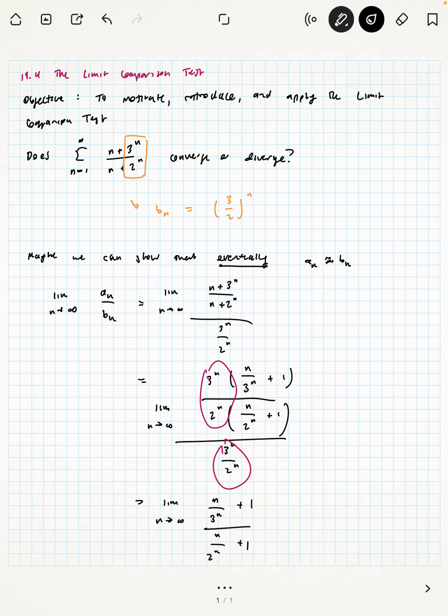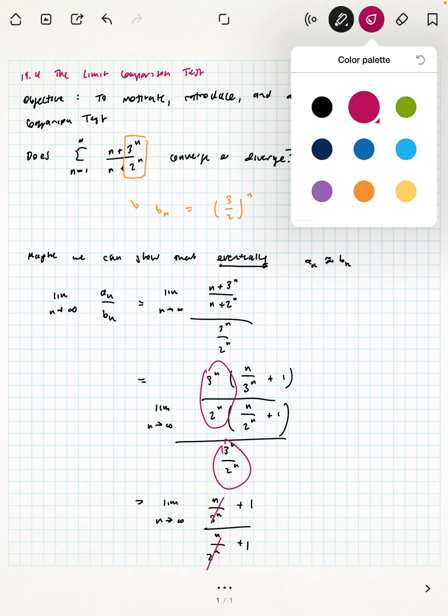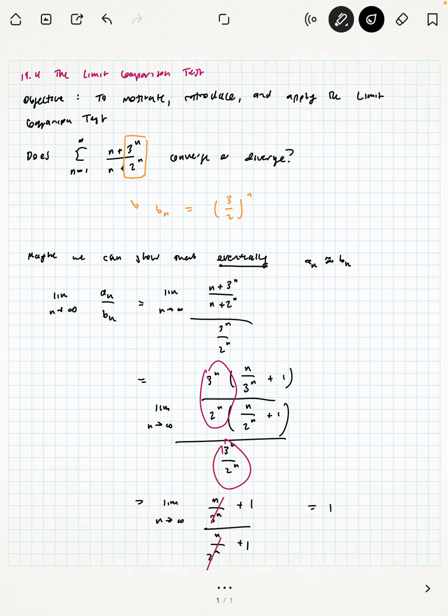So 3 to the n, 2 to the n, those are exponential functions. They are certainly much faster than linear functions. So a linear function in n is going to converge much slower to infinity than 3 to the n. And that suggests that in the limit, this will reduce to 0.